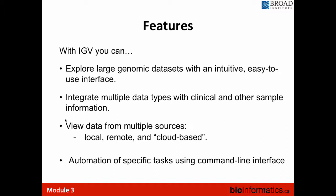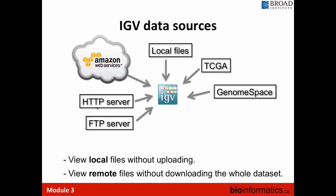IGV can also be used non-interactively. For instance, you can invoke IGV on the command line and pass it a batch file — IGV opens in the background, does everything specified in the batch file, such as taking a snapshot of the read alignment at every SNV of interest, producing a file in a specific directory, and then closing. In the same IGV session, we can view local files in a secure environment, and at the same time view remote files from public data sets without actually downloading them, which is very useful if you want to look at a lot of big data that's out there.